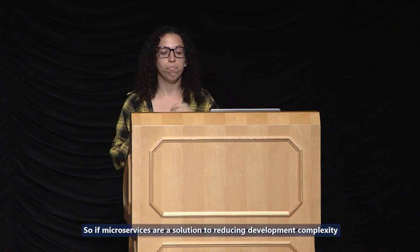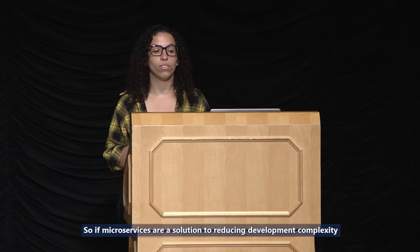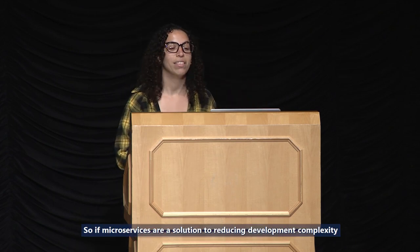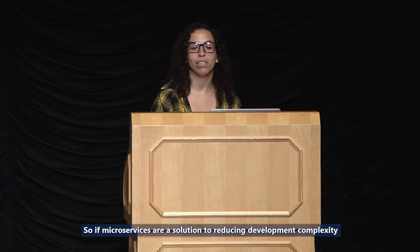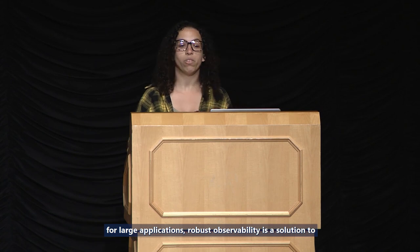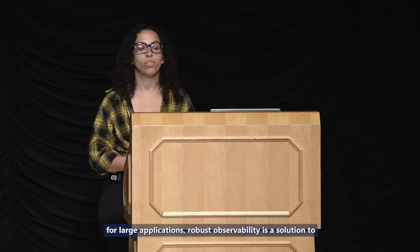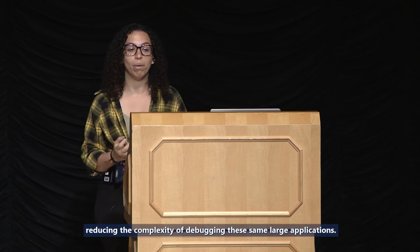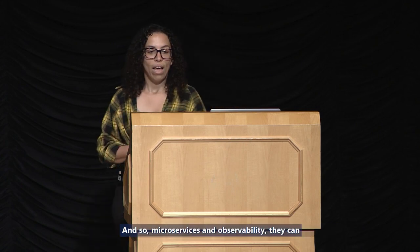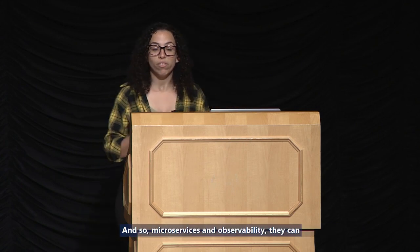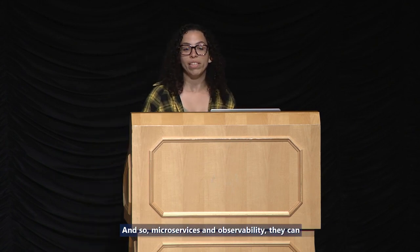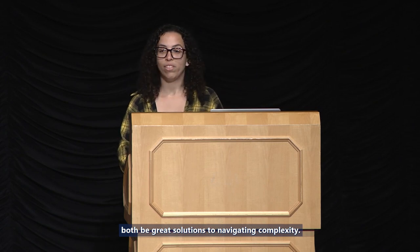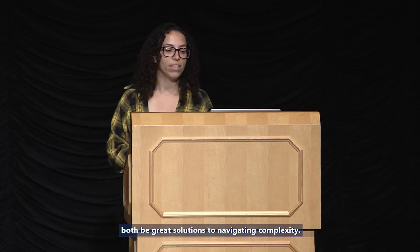If microservices are a solution to reducing development complexity for large applications, robust observability is a solution to reducing the complexity of debugging those same large applications. Microservices and observability can both be great solutions to navigating complexity.